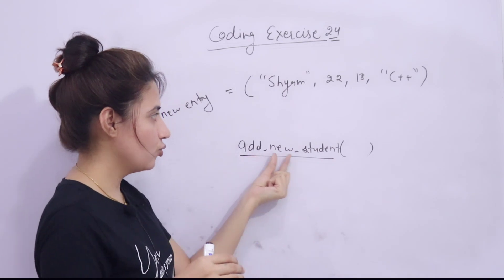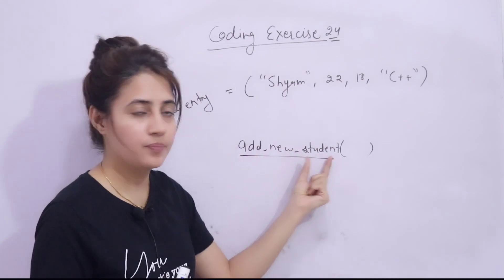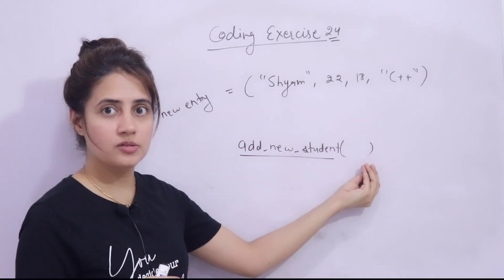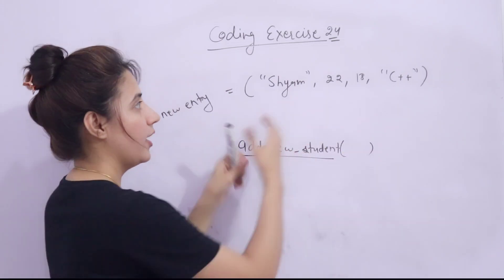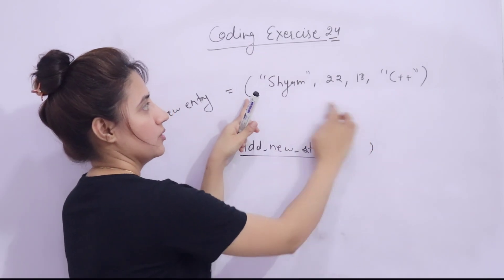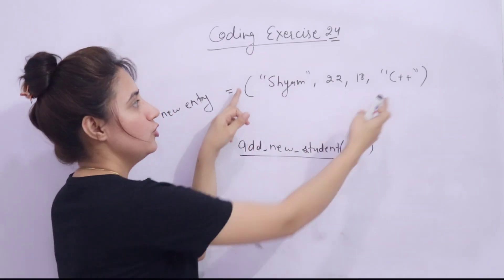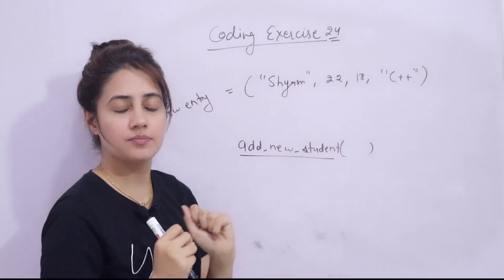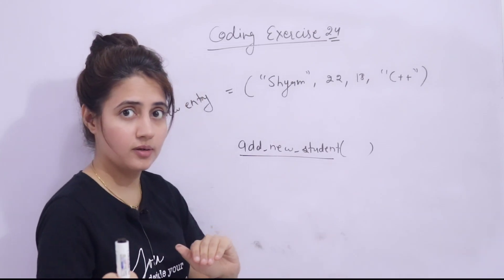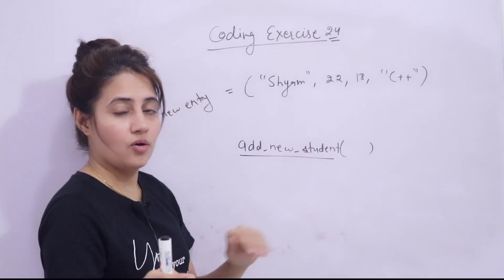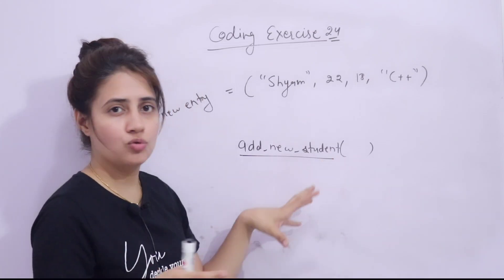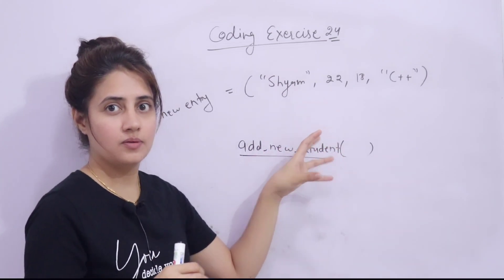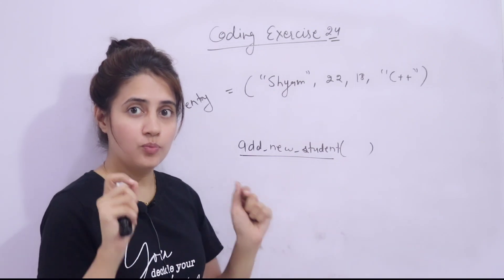Now you have to define a function. The function name you can take anything — suppose you are taking 'add_new_student'. How to define a function and how many parameters you need to pass? Because you have to add this information whenever you call this function, you need to pass these four arguments: name, roll number, age, and course opted. So how will you add this new student? This is your exercise — pause the video and try it out.